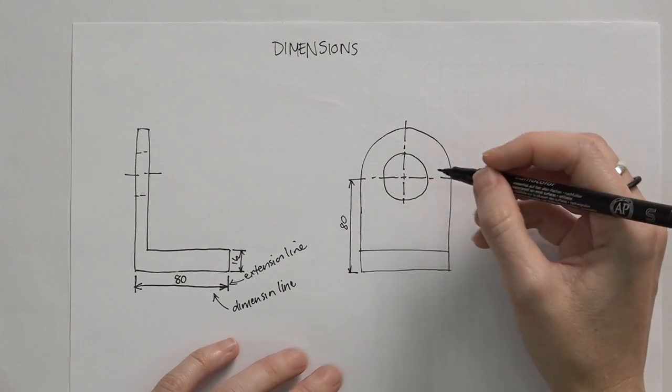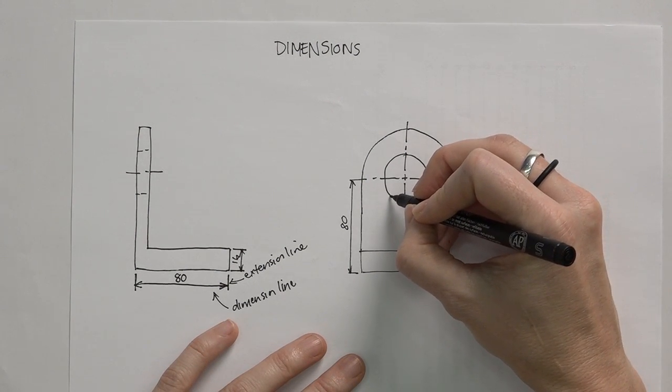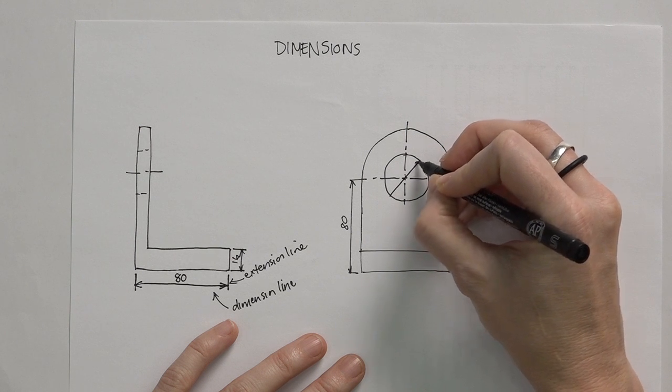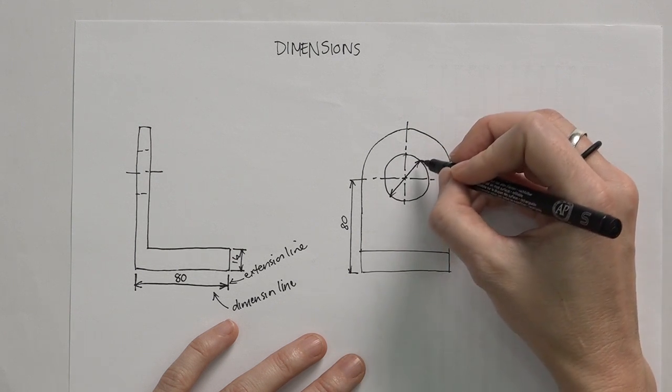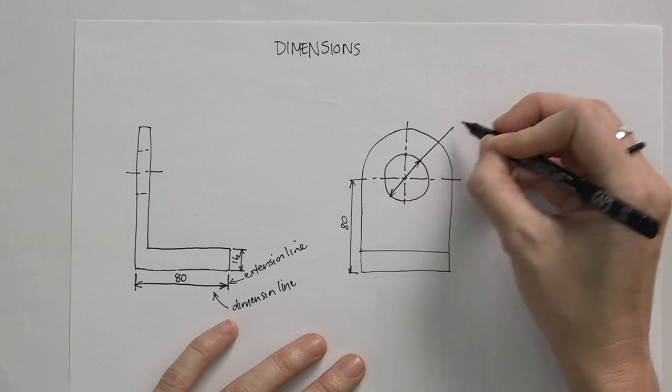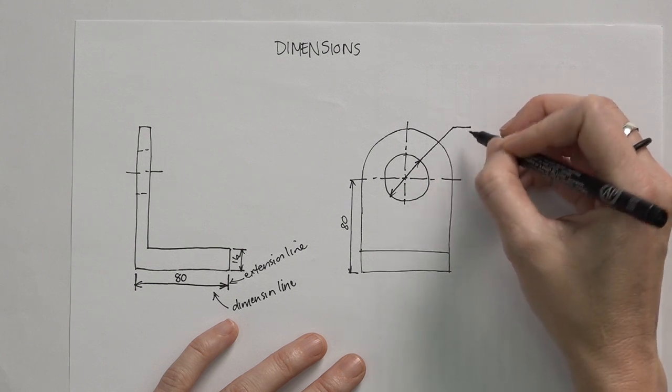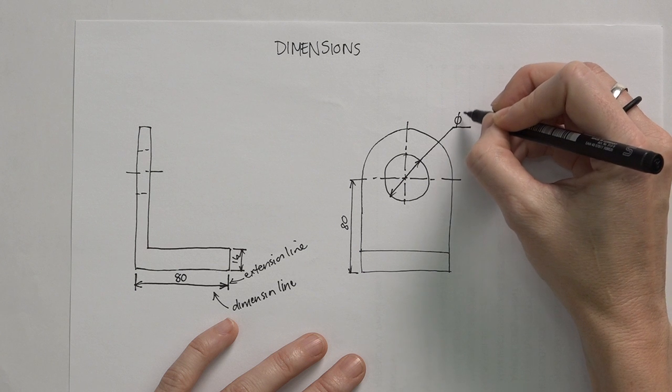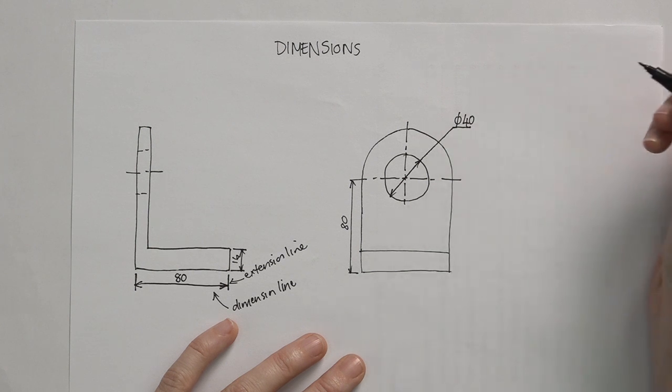When we look at dimensioning a diameter, we want to have a dimension line running across the centre line from one edge to the other. Then we extend that line out and it has a horizontal leg where we write diameter symbol and the size of that diameter.